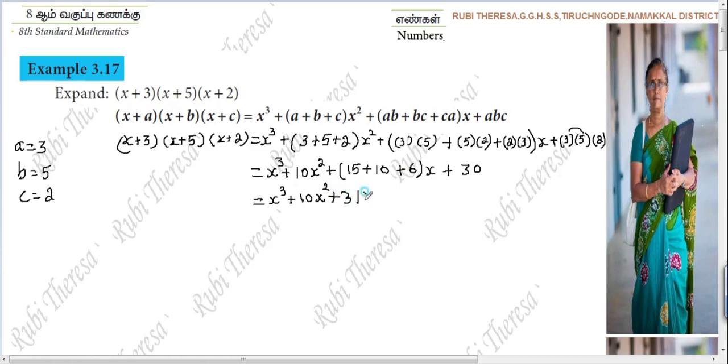31x plus 30. So this is the answer. Do you follow? x plus 3 into x plus 5 into x plus 2 equal to this is the answer.